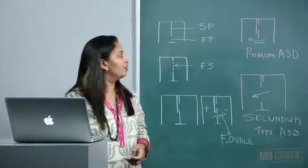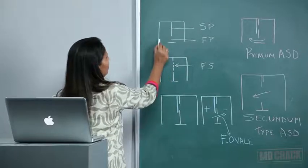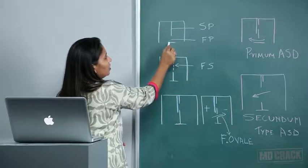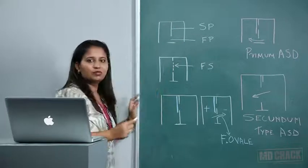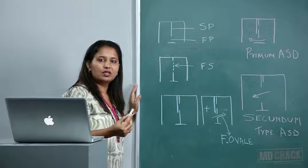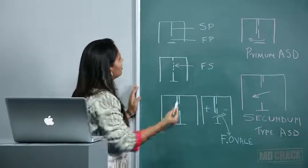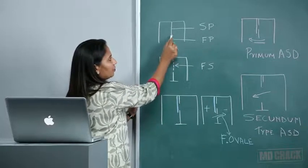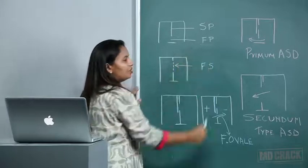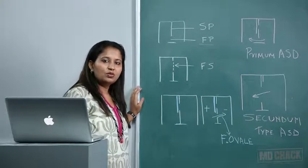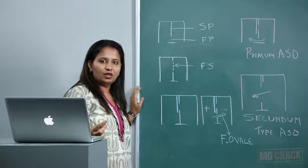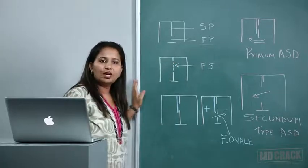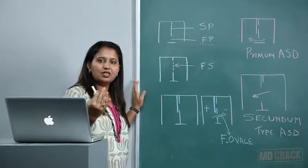Imagine this is the primitive atrium. The septum primum grows from the wall of the primitive atrium toward the endocardial cushion — that's why it is called septum primum. As it grows, there is a natural gap that occurs, known as the foramen primum. The foramen primum is not a hole — it is a natural gap that exists before the septum primum fuses with the endocardial cushion in embryonic life.